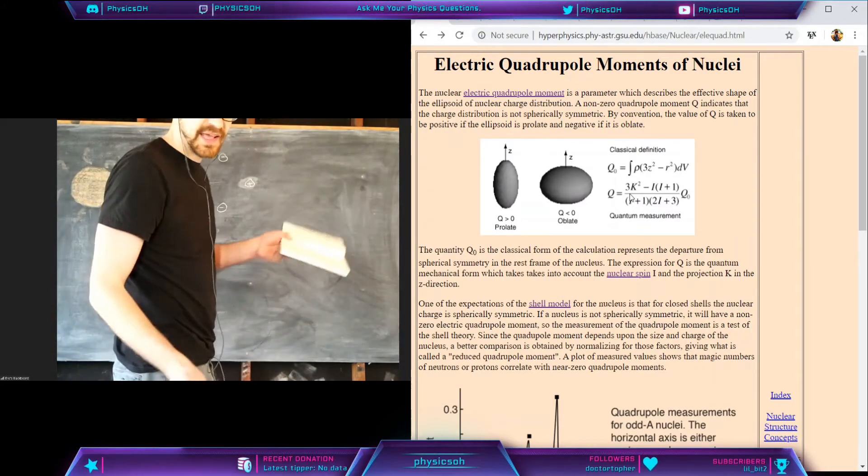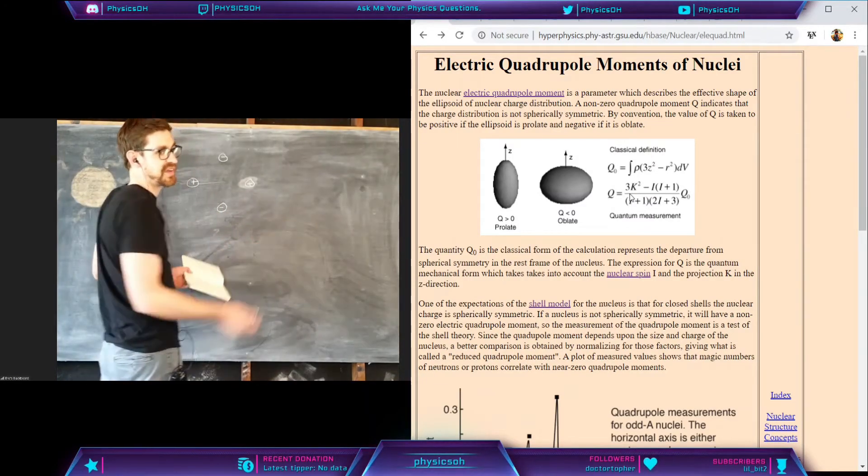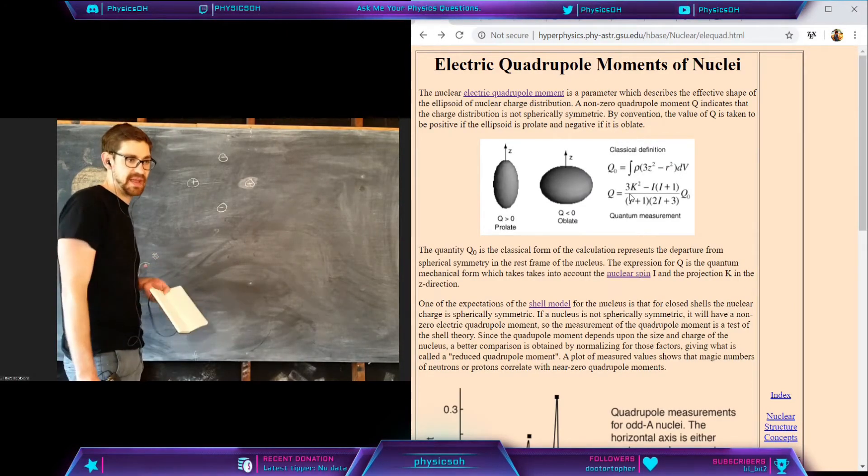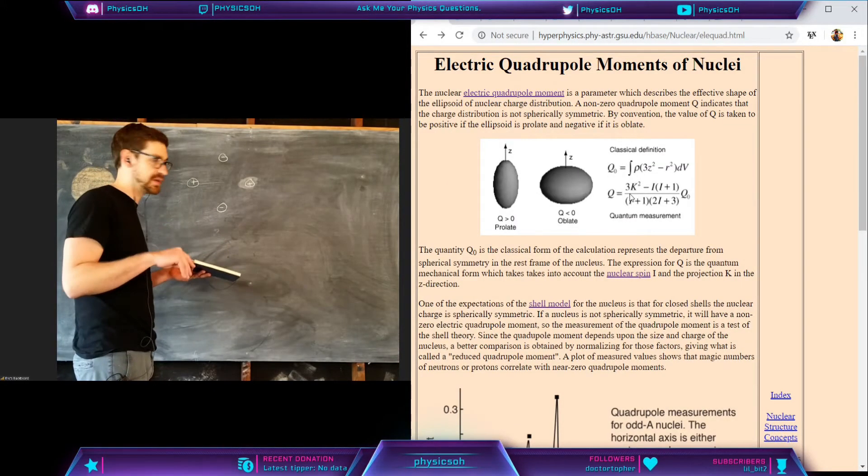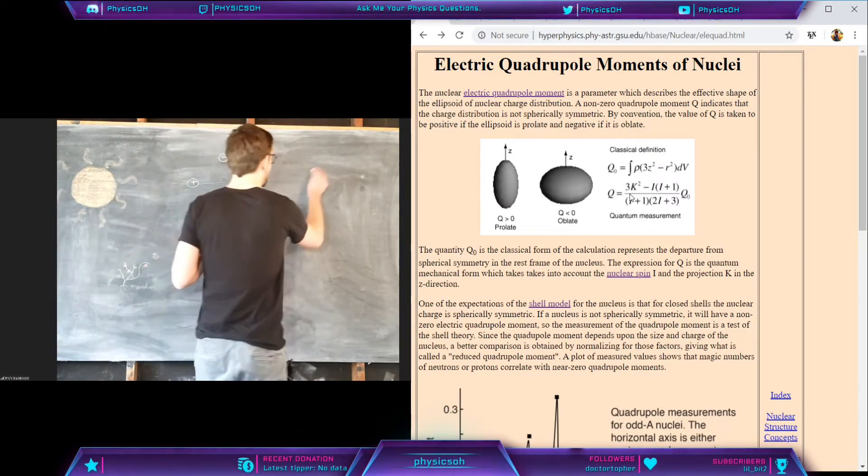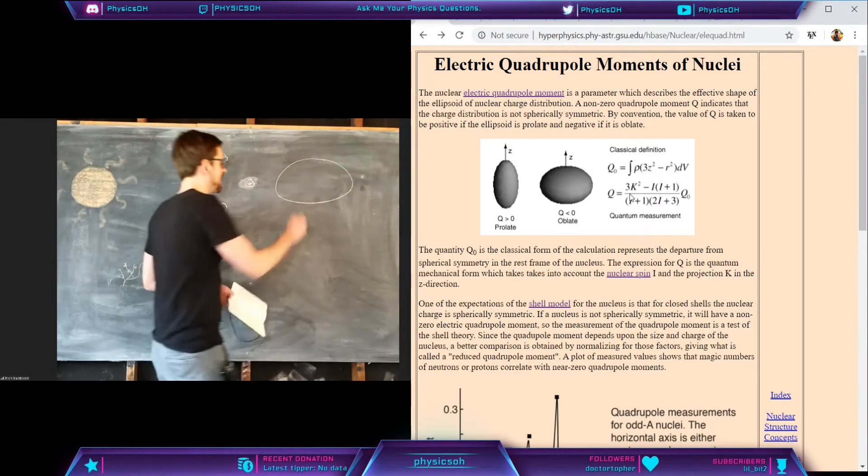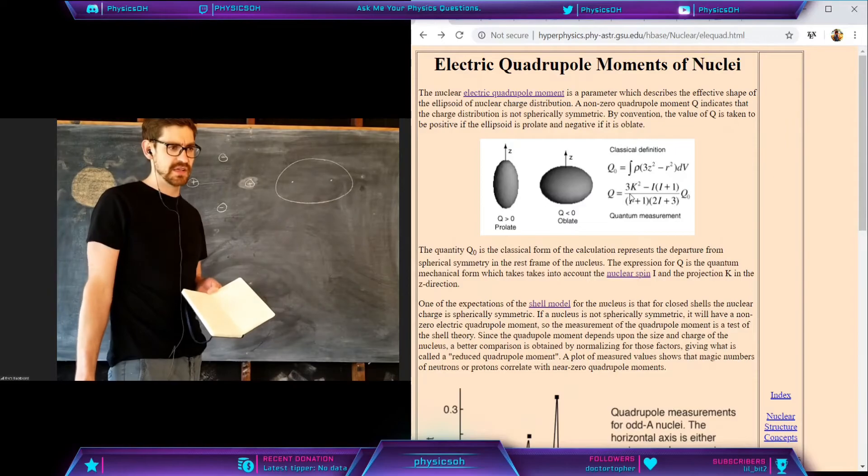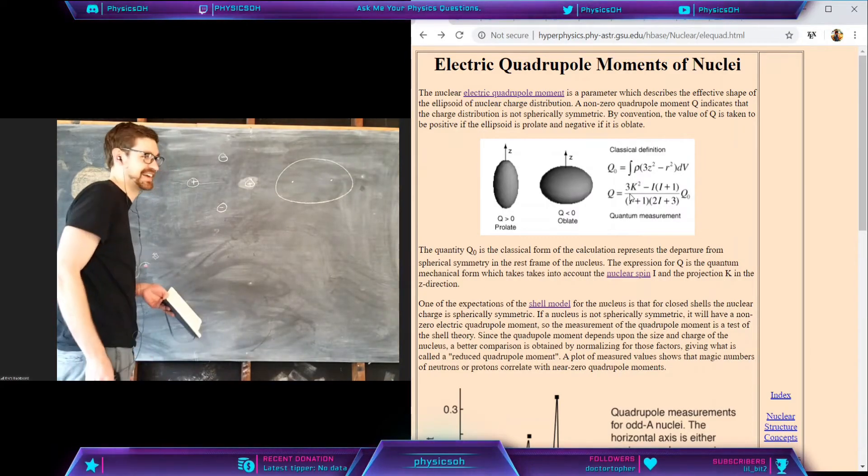What can happen is these can kind of get squished a little bit. If everything is perfect, the quadrupole moment would be zero. But it's not always perfectly symmetrical. A lot of times what happens is you end up getting this elliptical pattern. Everything about an ellipse has two foci.